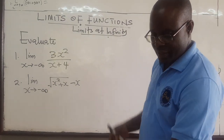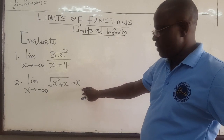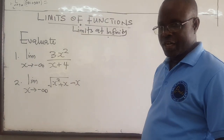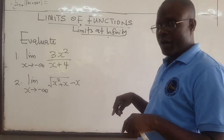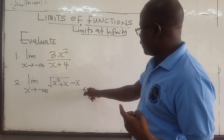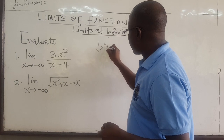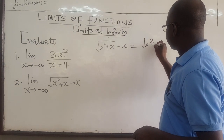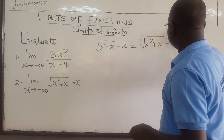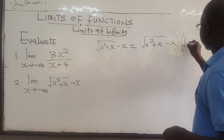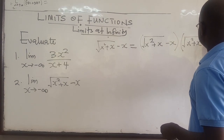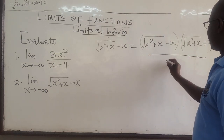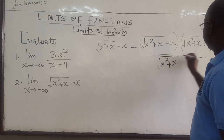What you do is similar to what we did for other examples: you rationalize this before finding the limit. So we can write square root of x squared plus x minus x, and multiply by the conjugate: square root of x squared plus x plus x, divided by the same thing — square root of x squared plus x plus x.